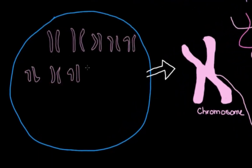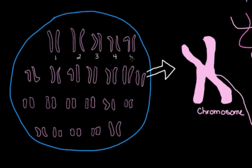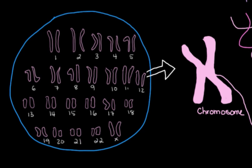You might remember that we have 23 pairs of chromosomes — so 46 individual chromosomes in each of our cells. In someone with down syndrome, who has this extra genetic material, they actually have extra genetic material from the 21st chromosome. So instead of two 21st chromosomes, they actually have three, and it's this extra genetic material that causes down syndrome.